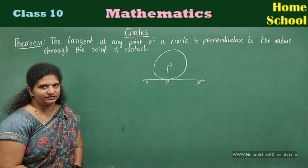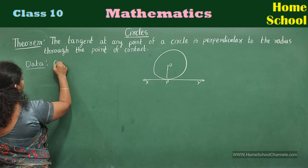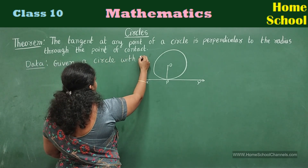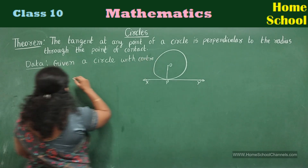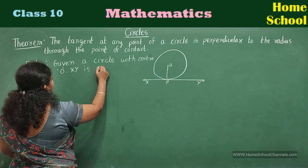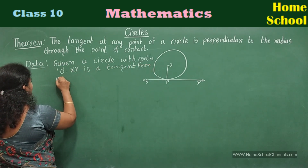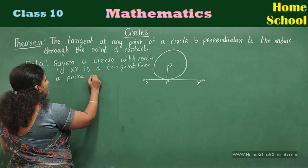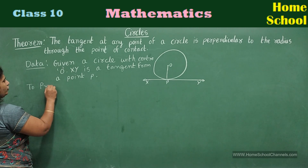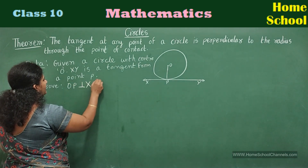Start writing the data. Given: a circle with center O, and XY is a tangent from a point P to the circle. To prove: OP is perpendicular to XY.